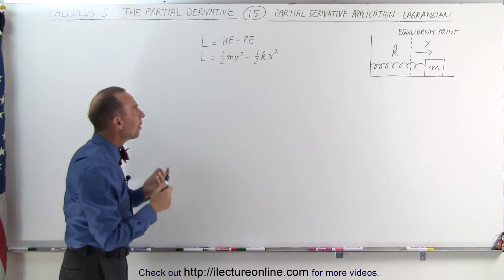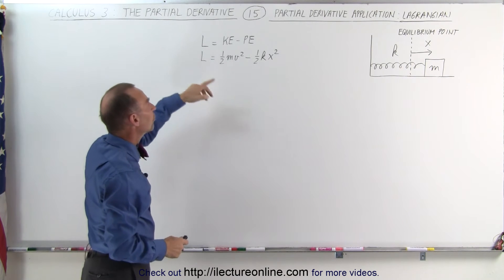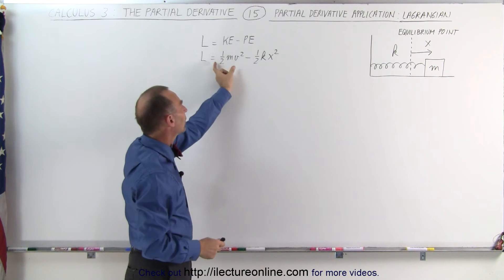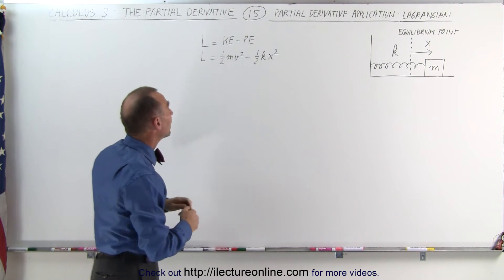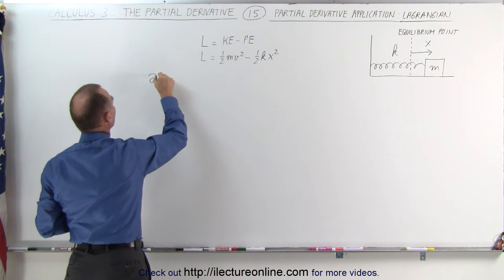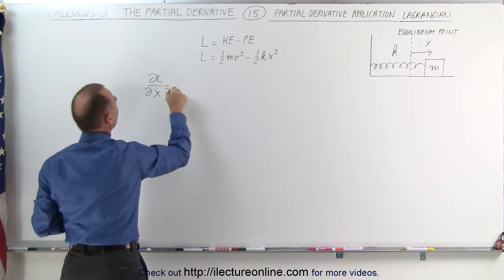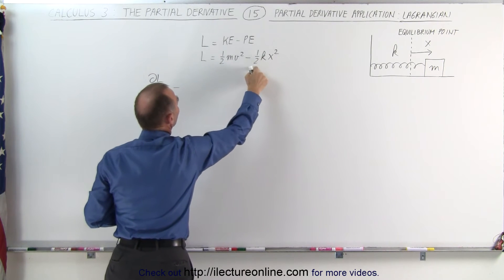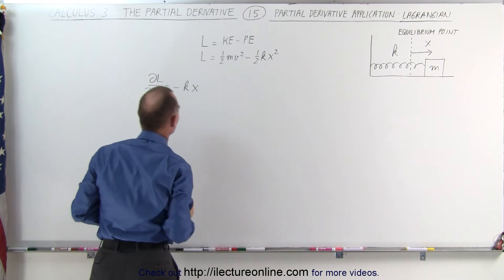If we take the partial derivative of the Lagrangian with respect to the variable x, then the kinetic energy term becomes a constant. We take the partial derivative, that term goes away, and we get the following result. The partial derivative of the Lagrangian with respect to x is equal to minus — notice we get 2 times 1/2, which is 1 — k times x.